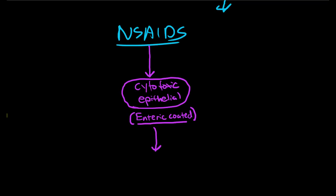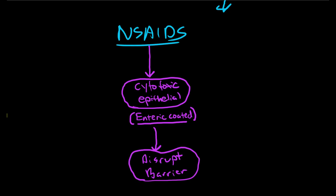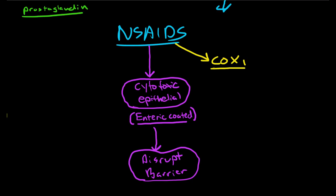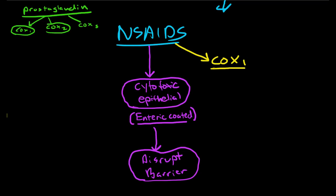If you kill off a few cells, then you disrupt the barrier — the cells adjacent to them are going to be exposed to acid on their lateral or basilar surfaces. Another thing that disrupts the barrier is inhibition of the COX-1 receptor. If you remember from pharmacology, we have prostaglandins in our body, and prostaglandins have receptors for COX-1, COX-2, and COX-3.